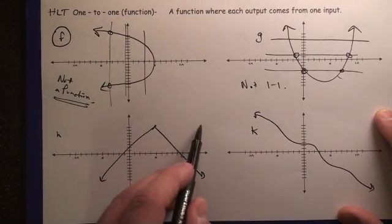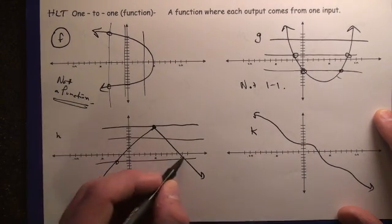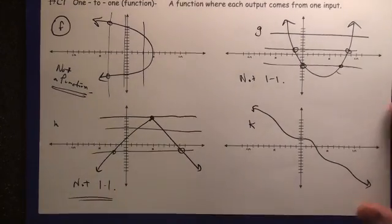Same thing for h. At this horizontal line, you have it touching at one point, but all the other horizontal lines, you're getting two points. So therefore, not one-to-one because it fails the horizontal line test.